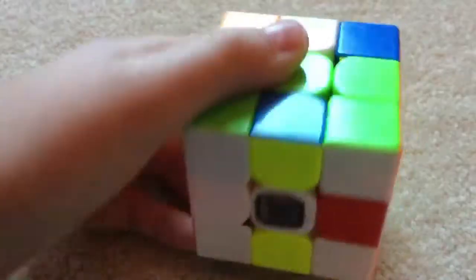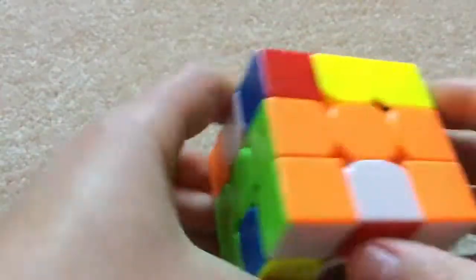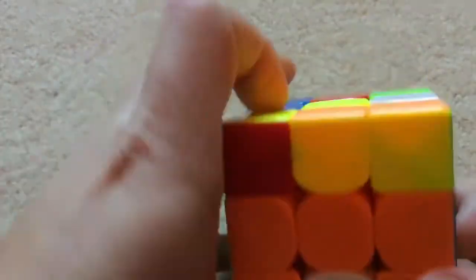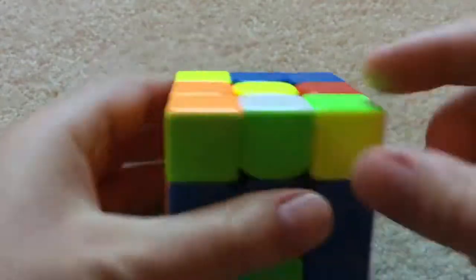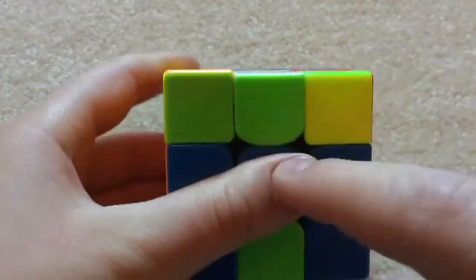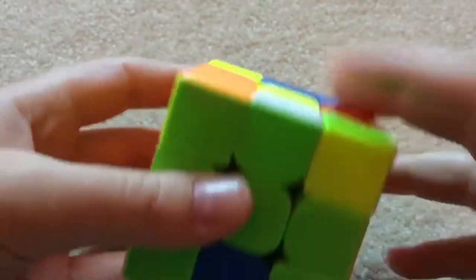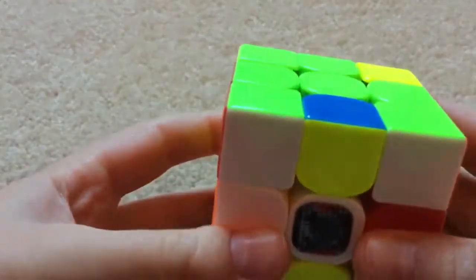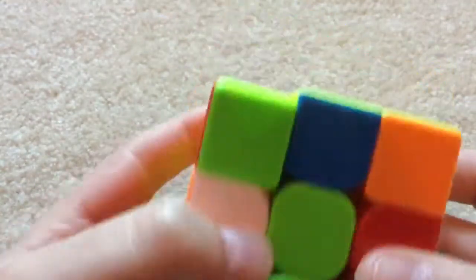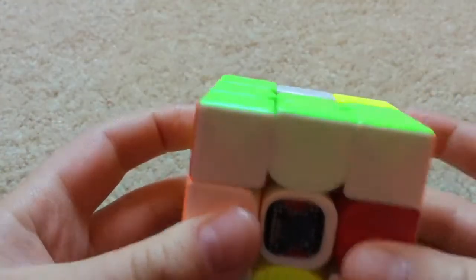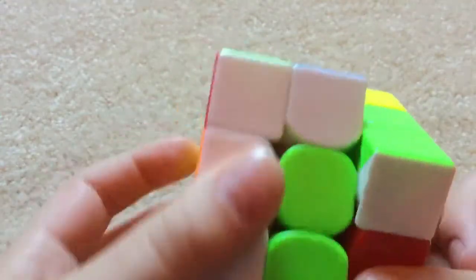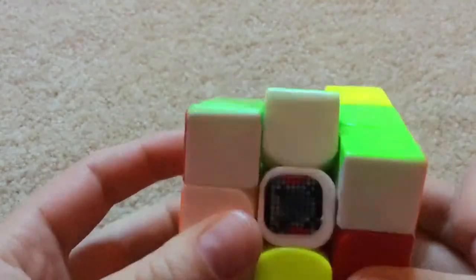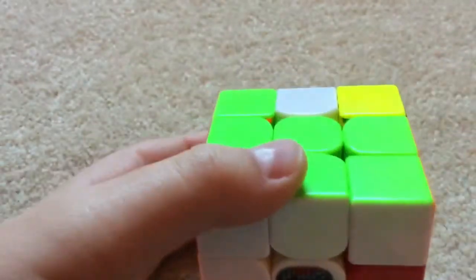We're on to inserting our edges. So we're going to look around, and I'm going to show you the easiest case first. It is where you have one edge with the white on top and the color right here. So you can match up the color, then do a rotation, then do the algorithm U2M, U2M', so U2M, U2M'. That is the algorithm. So now we have this edge inserted.